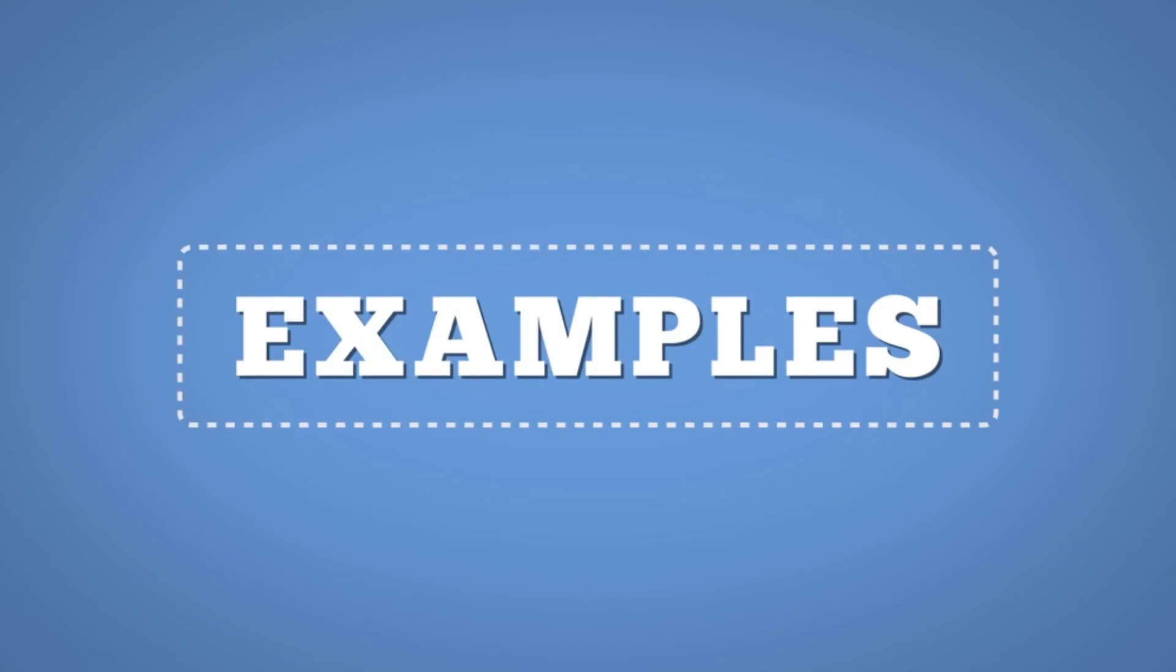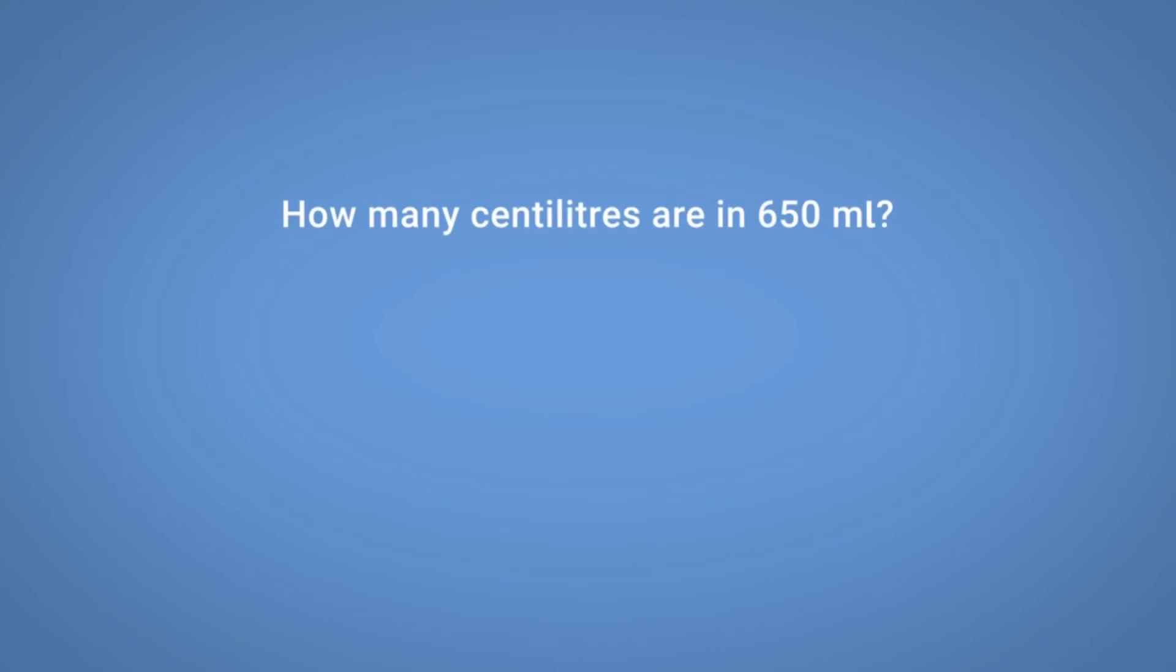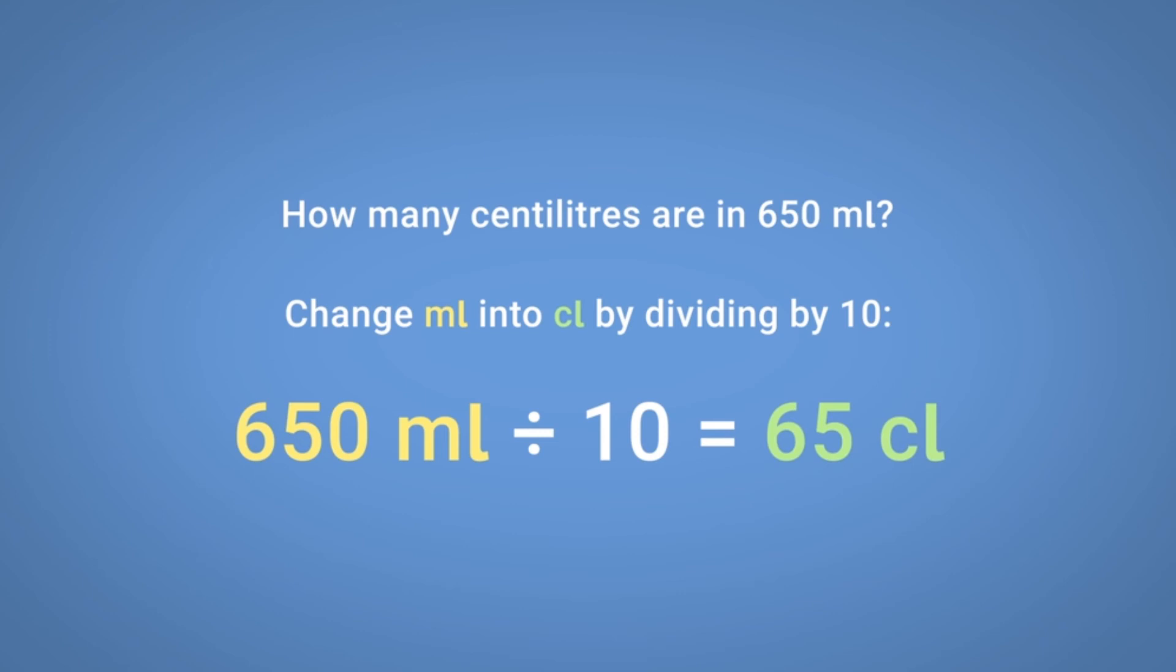Let's take a look at some example questions for convert between units of capacity. How many centilitres are in 650 millilitres? We can change millilitres into centilitres by dividing by 10. 650 millilitres divided by 10 equals 65 centilitres.